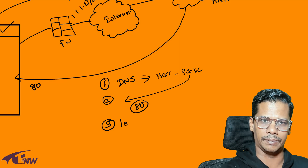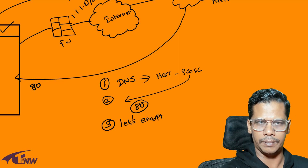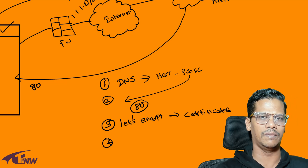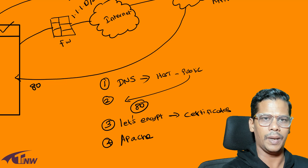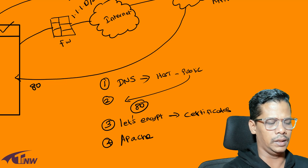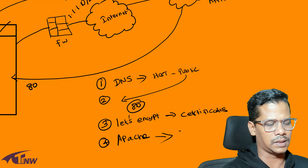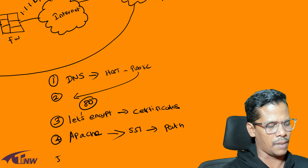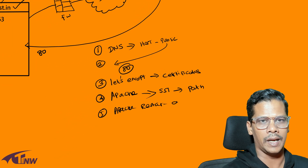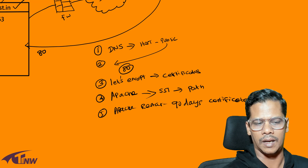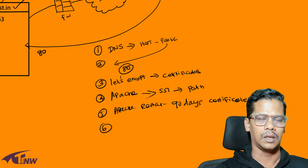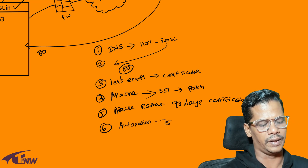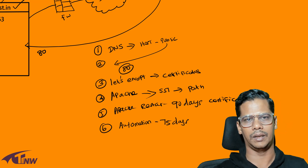Let's Encrypt. Number 4. Let's Encrypt — that means you have to do it in 90 days. You have to automate it every 75 days and generate a new certificate.